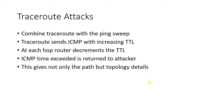An attacker can simply perform an ICMP sweep of a specific subnet that was learned via traceroute, and they now have even more devices that they can target for attack in the future. So far we have discussed how ICMP is vulnerable in such a way that its functionality is used by attackers to learn about our network.